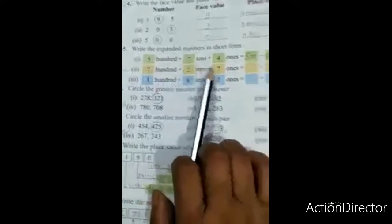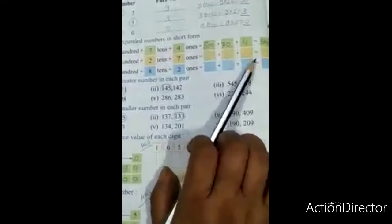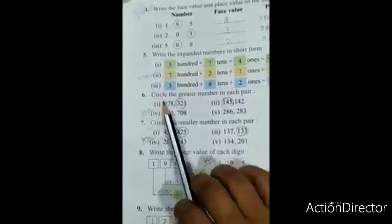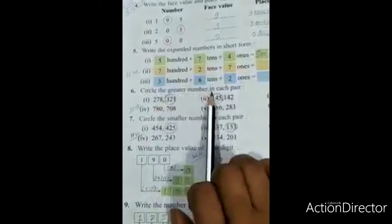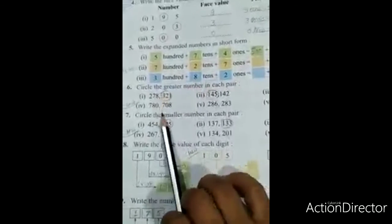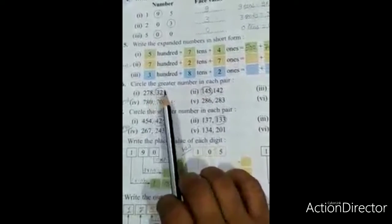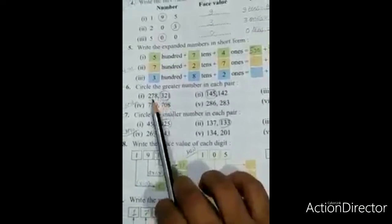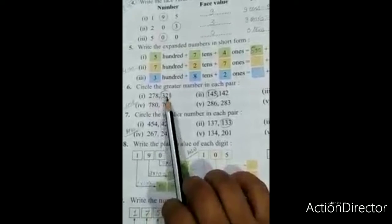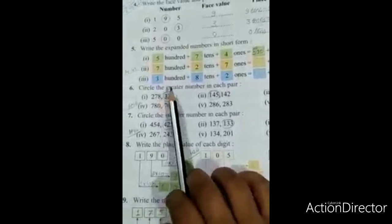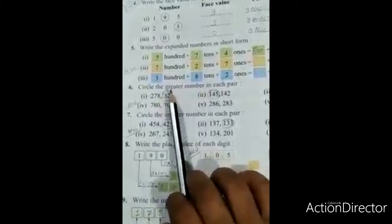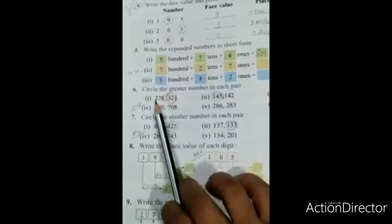Next is your homework. You will do this yourself. Next: Circle the greatest number in each pair. Here two numbers are given in pairs - three-digit numbers. You have to compare them to find which one is greater and circle it.